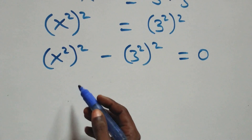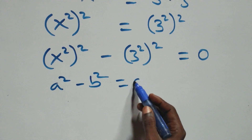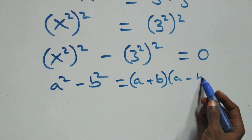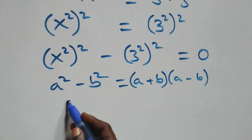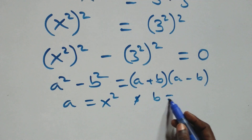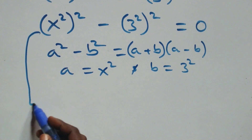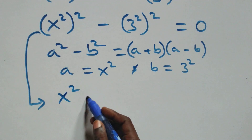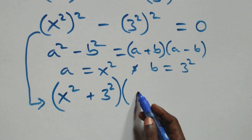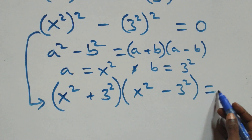This follows from the difference of two squares: a squared minus b squared equals (a + b)(a − b). Here, a stands as x squared and b stands as three squared. So this becomes (x squared + three squared)(x squared − three squared) equals zero.